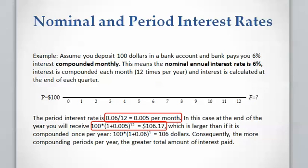Now let's assume the bank pays you 6% interest compounded monthly, which means the interest rate is compounded 12 times a year. In this case, the bank calculates the interest every month. Similar to the previous example, the period interest rate is going to be 6% divided by 12, which is 0.5% per month. You will receive $100 multiplied by (1 + 0.005)^12, which equals $106.17. Because there are 12 compounding periods and the per-period interest rate is 0.5%, since interest rate is compounded monthly you will receive slightly higher money at the end of the year.